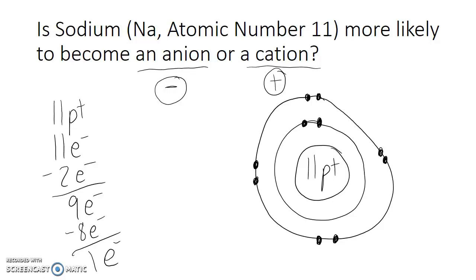And if it does that, if it finds another atom that's willing to take that electron, well, then sodium would have 11 protons because those are still in the nucleus, and that's not going to change. But it will have 10 electrons. In this case, the number of positive charges will outnumber the number of negative charges. And so sodium is likely to become a cation, not an anion.